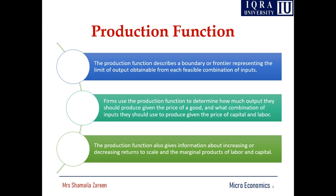The production function describes a boundary or frontier representing the limit of output obtainable from each feasible combination of inputs. It means you are using some specific inputs and producing some outputs. It also gives information about increasing or decreasing returns to scale and the marginal productivity of labor and capital.